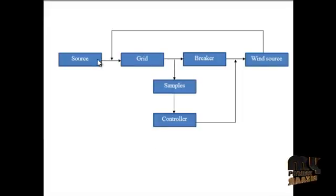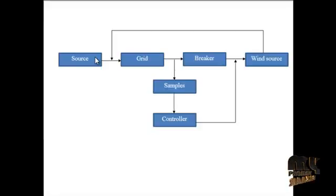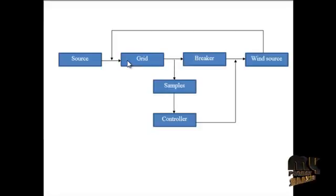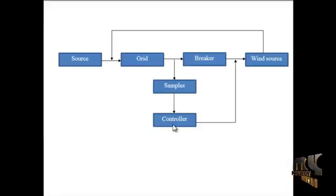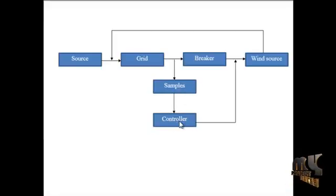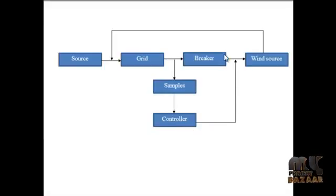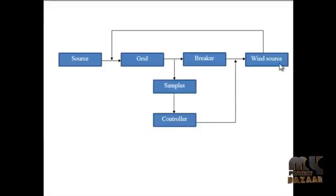Here the 3-phase AC source will be generated by another source in real time, and that will be given to the grid. The grid takes samples and passes them to the UPQC controller. If the grid does not give a sufficient amount of power, it will activate the breaker and draw current from the wind source.